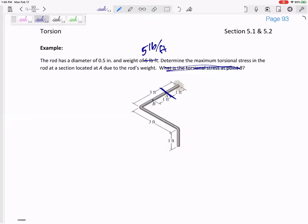All right, so a few things. If we want to find the maximum torsional stress, that's the TR over J, correct? So I need to find what is T at this cut. What is T at this cut?